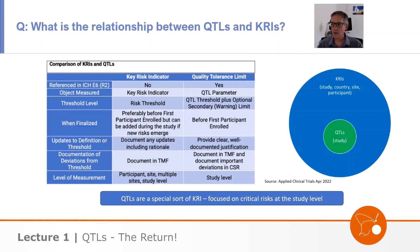When you start to look at that, what you might start to realise — and this is what this article suggests — is that actually QTLs are really a subset of KRIs. They're KRIs focused on critical risks at the study level. You could think of them as critical key risk indicators. This simple Venn diagram shows QTLs as a subset of all different sorts of KRIs.